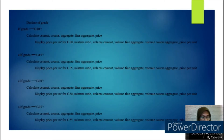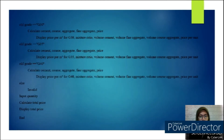Then for the selection of grade: if the grade is G10, calculate the cement cost, coarse aggregate, fine aggregate, and price. Display price per meter cube for G10, mixture ratio, volume of cement, volume of fine aggregate, volume of coarse aggregate, cost of aggregate, and price per unit.